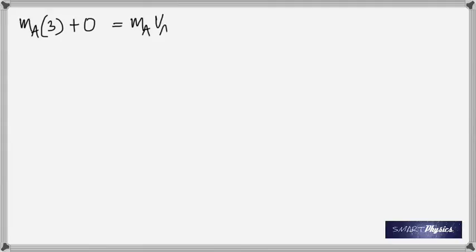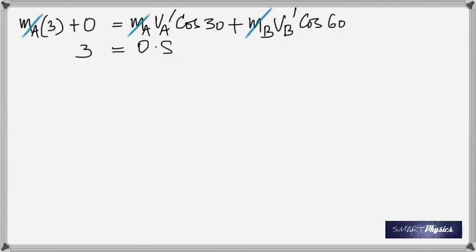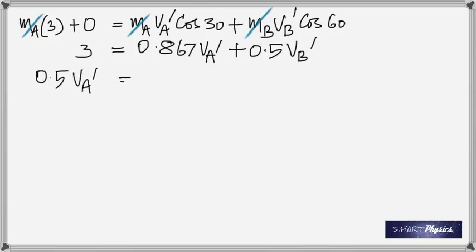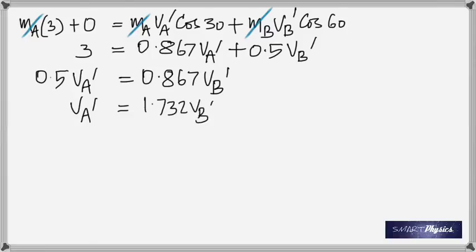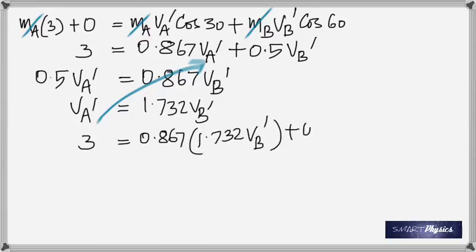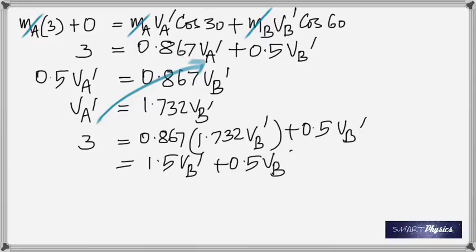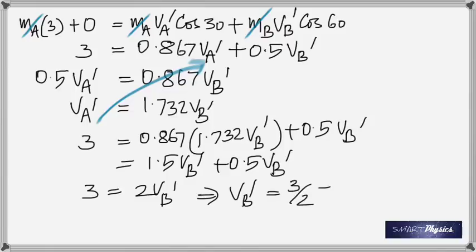Now I'm using the conservation of momentum along the x-axis. I get this relation. I had this relation before, so using both relations and substituting, we can solve for both Va prime and Vb prime. Finally, Vb prime is 1.5 meters per second. Once you get that, you can plug it into this relation and get Va prime if you want to.